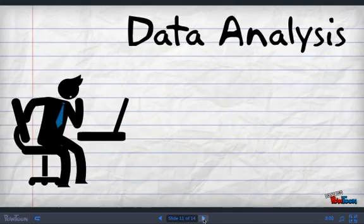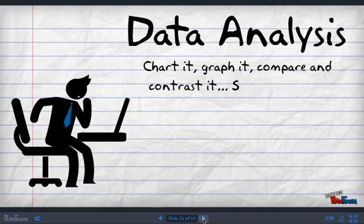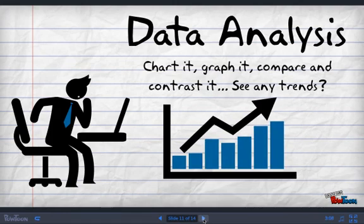Data analysis. So you have oodles and oodles and gobs and gobs of data. Now, what do you do with it? Well, you chart it, you graph it, you compare and contrast it and you see if you recognize any trends or common occurrences or any correlations between different sets of data that would either support or disprove your hypothesis. Data analysis is you looking back at what you gathered from your experiment and seeing what it is telling you about your tested explanation.